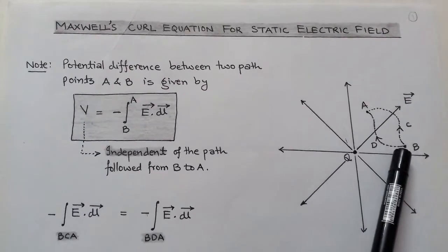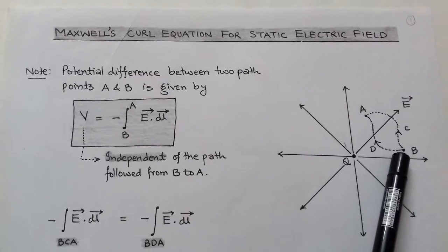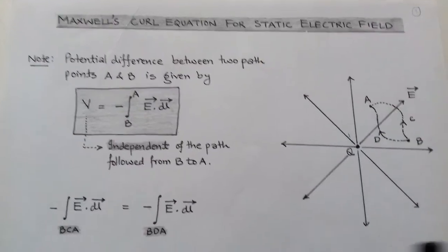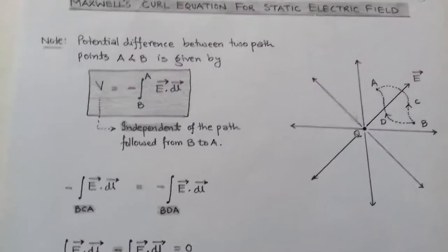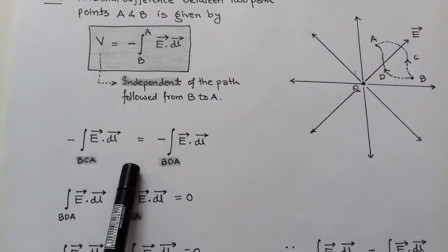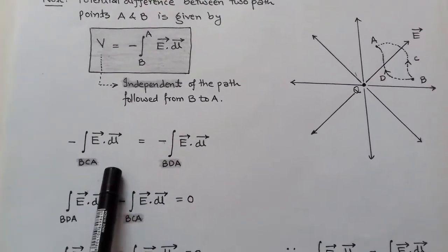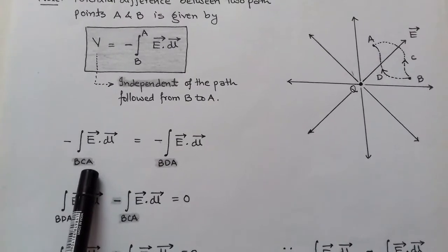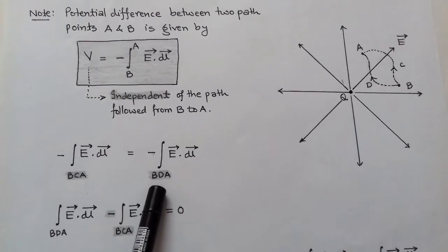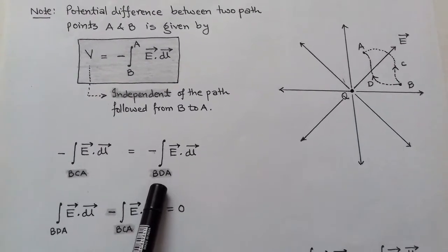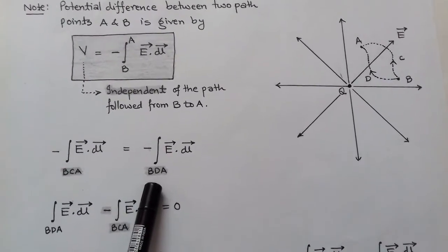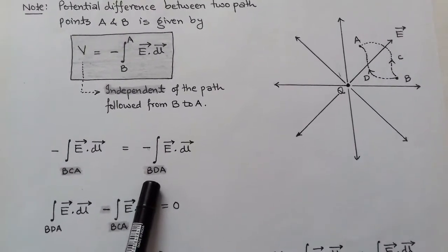Here we consider two paths. The first path is BDA and the second is BCA. While moving on these two paths, the potential difference between point A and B is the same. So the potential difference while moving from BCA and BDA is equal. We take this potential difference for path BCA and for path BDA.